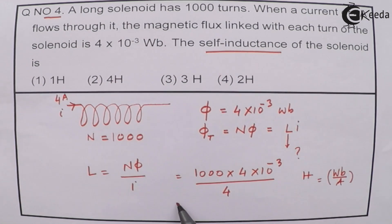If you solve this, then 4 and 4 will cancel, 1000 and 1000 will cancel, and we are left with 1. So the answer is 1H.